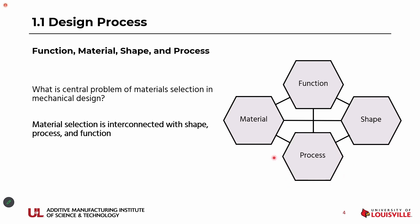In 3D printing we have seven major processes, and each process can accommodate only limited materials. You can't use whatever material you want. If you select your process first, you limit yourself to only certain materials.